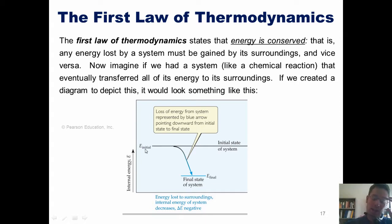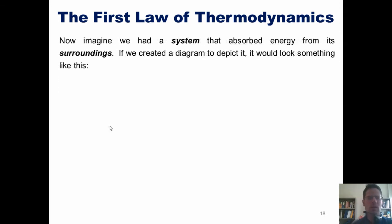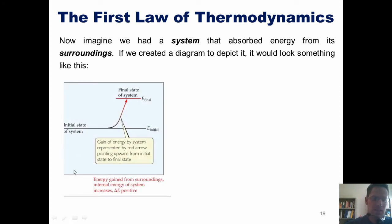We'd call the two energy levels, the one at the start and the one at the end, E initial and E final. Now, I want you to imagine that instead we had a system that absorbed energy from its surroundings rather than giving energy to its surroundings. If we created a diagram to depict that scenario, it would look something like this. Our initial state of our system, E initial, is at some energy level. As our surroundings transfer energy into that system, the energy level of the system increases until it gets to a final state, E final shown here.